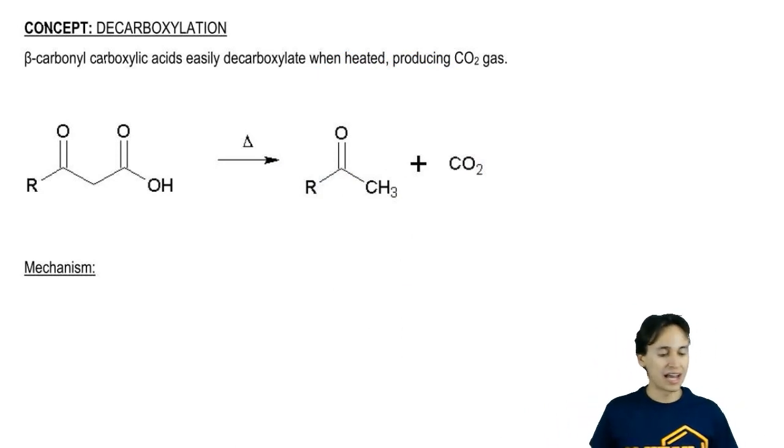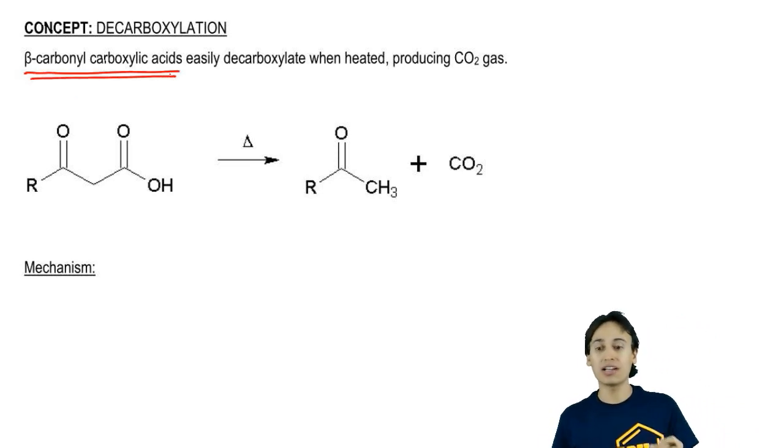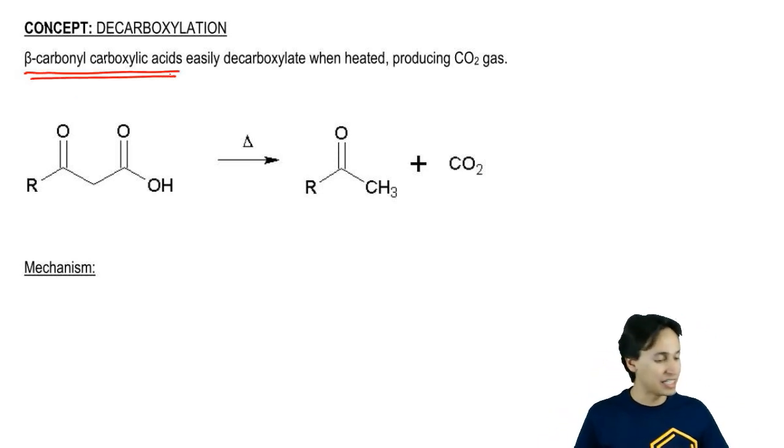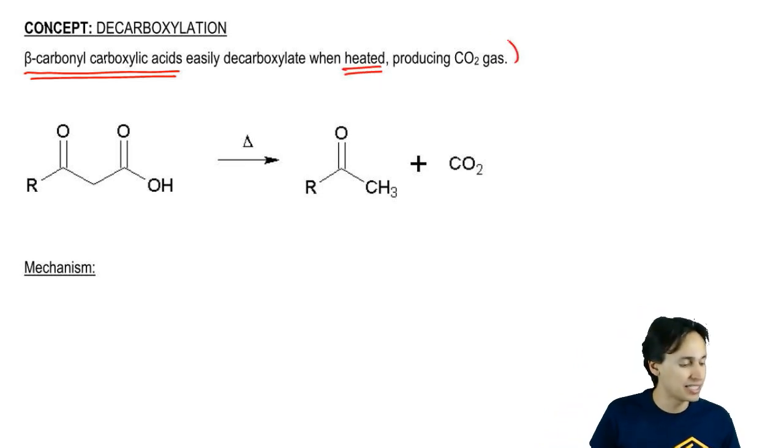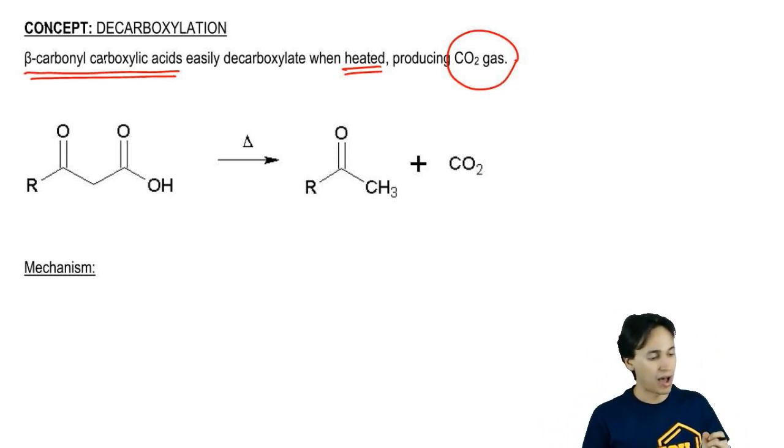The way that it works is that a beta carbonyl carboxylic acid can decarboxylate in the presence of heat. What this does is it produces CO2 gas as a byproduct that evolves out of the material.